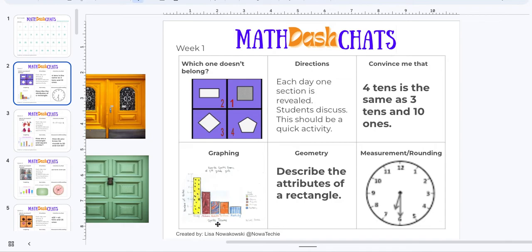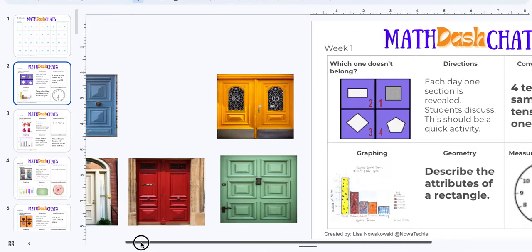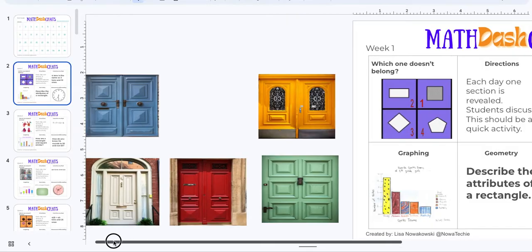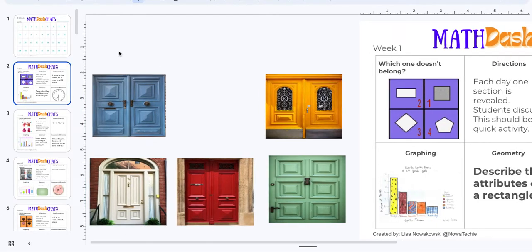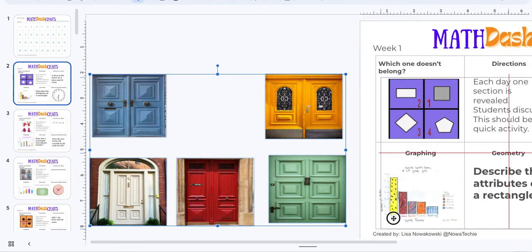So how it should work or how I envision it working is there are these doors over to the side. If I click and hold and highlight all of those doors, you'll get that blue line. I can then grab the corner of one and just drag all of them over at once.